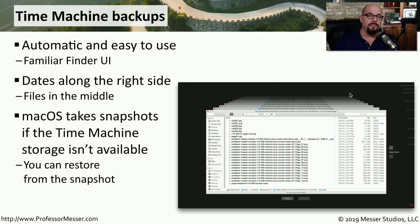You would normally have a backup drive directly connected to your computer or across the network. But if you're on a laptop and away from that backup drive, the operating system will save snapshots of that information. When you connect back to your network, Time Machine will update the backup with the snapshot information.